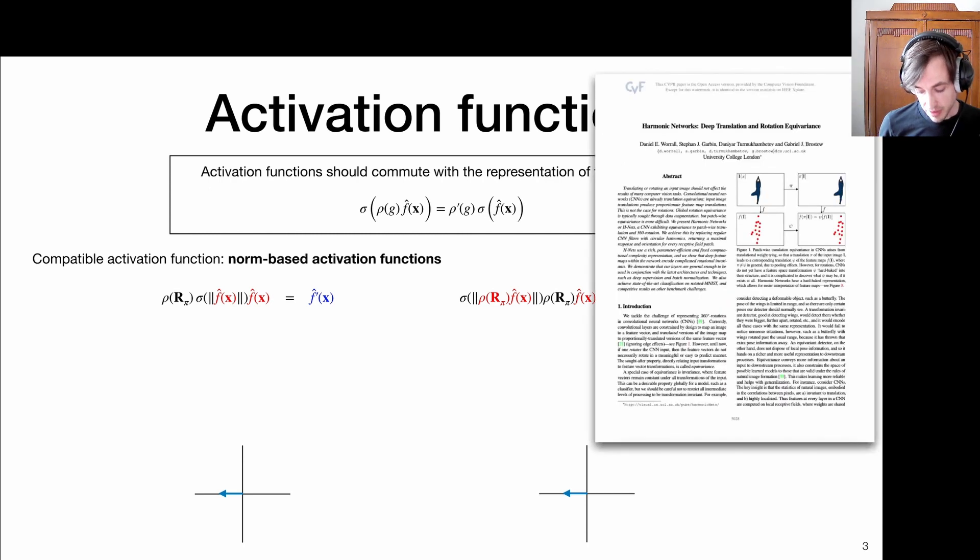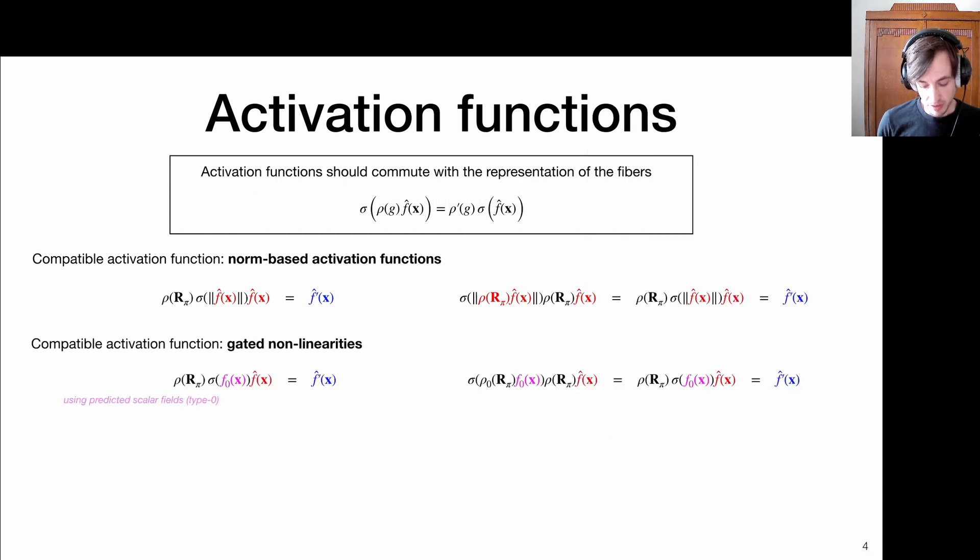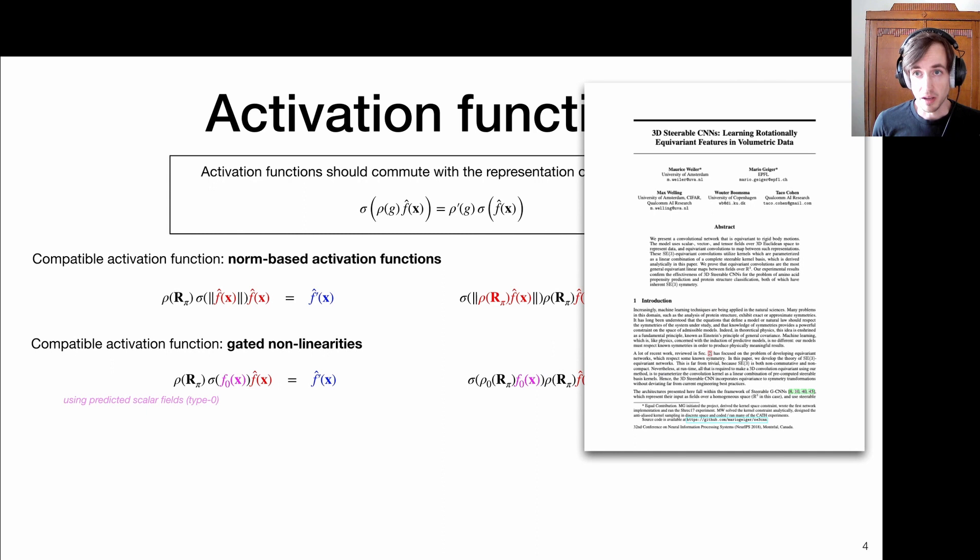And this is what you would call a norm-based activation function. And this sigma is typically like a linear weight plus a bias. And sigma could be a ReLU or a sigmoid or really whatever I want. Okay. And this was the type of activation function first introduced in this seminal paper, harmonic networks by Daniel Worrell and co-authors, which we're going to cover in the next video. But the idea of this norm-based activation function was then further utilized in this paper, which I also mentioned before, these steerable methods, which are referred to as gated nonlinearities.